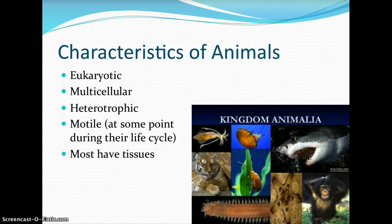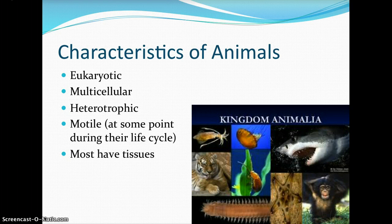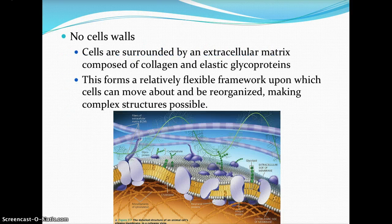Characteristics of animals: we are eukaryotic and multicellular, meaning we are made up of more than one cell. Our nutrition is heterotrophic — whether you're an omnivore eating plants and animals, a carnivore eating just animals, or an herbivore eating just plants — we are ingesting food to obtain nutrients for our metabolism. At some point during a life cycle, all animals are motile, meaning they have movement and move at their own free will, and most animals have true tissues.